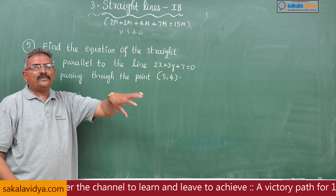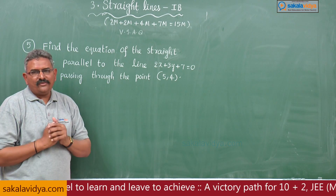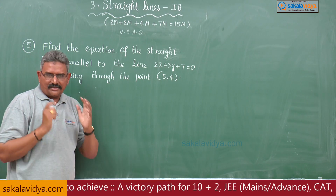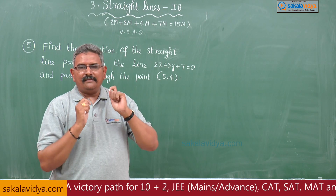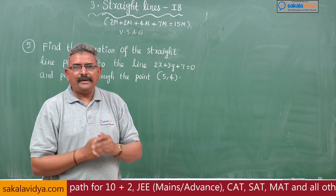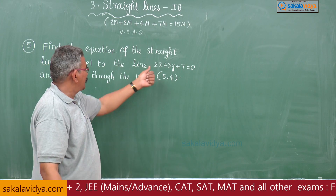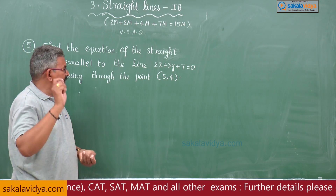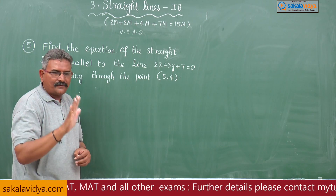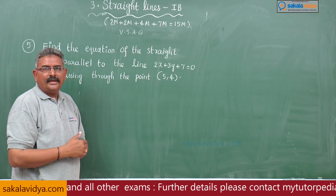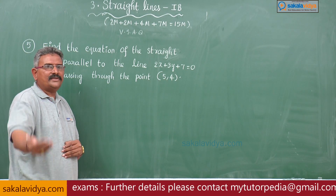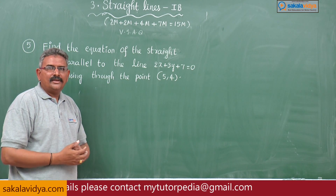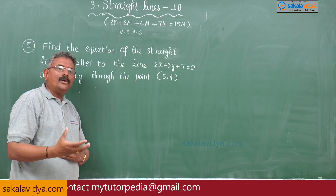Substituting 5 comma 4 into the equation, we get the k value. First, we write the equation of a line parallel to the given line as 2x plus 3y plus k is equal to 0, say equation 1. Since it passes through 5 comma 4, put x equals 5 and y equals 4. Evaluate the value of k from the linear equation in k, then the required equation can be obtained.